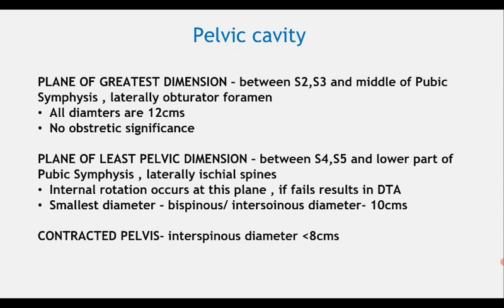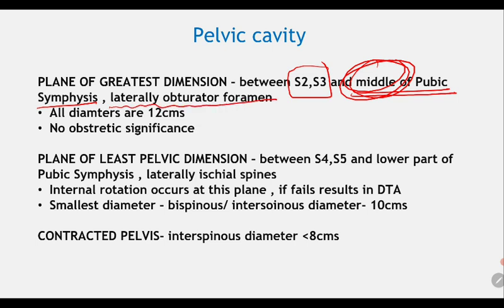The plane of greatest pelvic dimension passes through the S2-S3 junction and the middle of the pubic symphysis, bounded laterally by the obturator foramen. All diameters at this plane are equal at 12 cm. This plane has no obstetric significance.